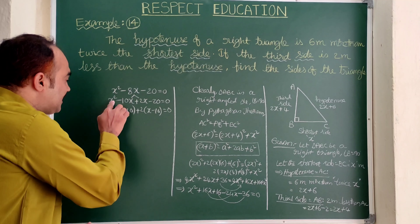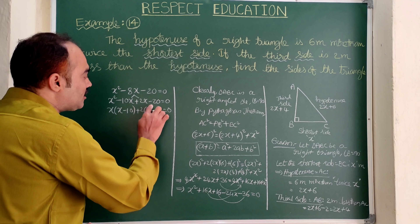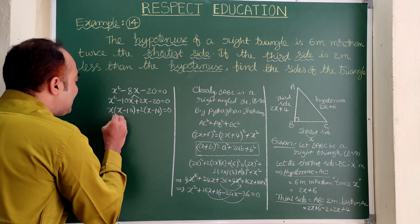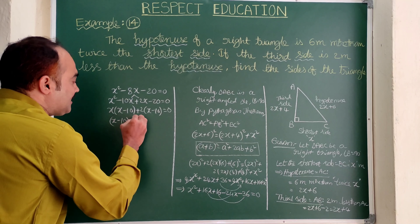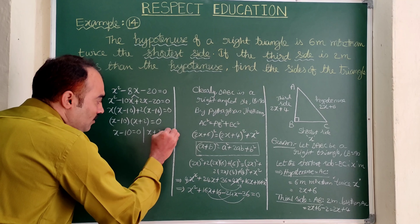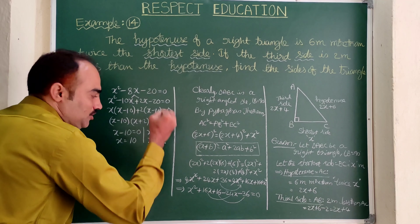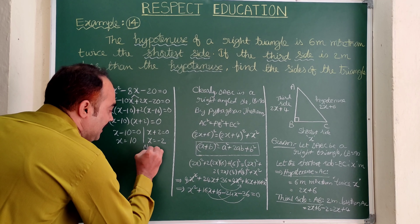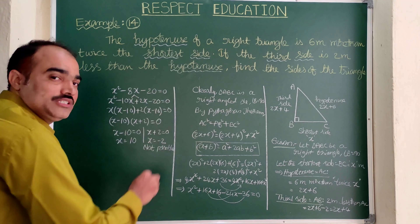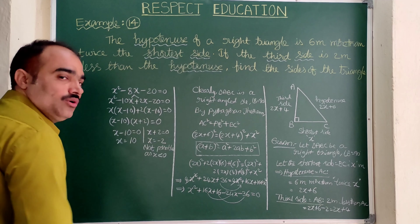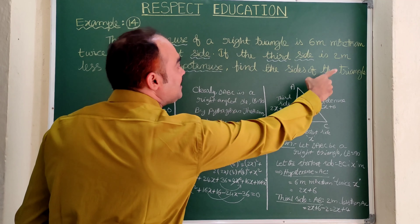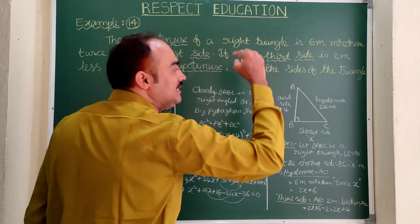Taking common factors: in the first two terms, x is common giving x(x minus 10); in the last two terms, 2 is common giving 2(x minus 10). So we get (x minus 10)(x plus 2) equals 0. This gives either x equals 10 or x equals minus 2. Since a side length cannot be negative, x equals minus 2 is not possible. Therefore x equals 10 meters.